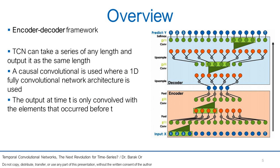The encoder-decoder framework is used in the TCN. The most critical features are as follows: one, TCN can take a series of any length and output it at the same length. Two, a causal convolution is used where a 1D fully convolutional network architecture is applied. Three, a key characteristic is that the output at time t is only convolved with elements that occurred before time t.